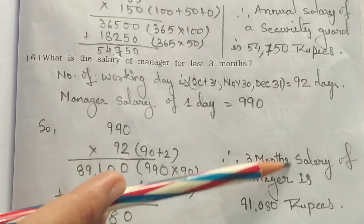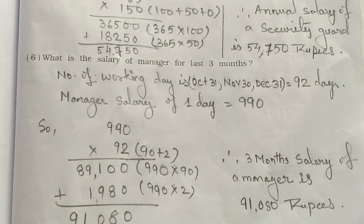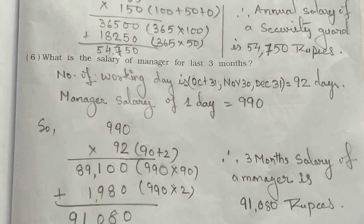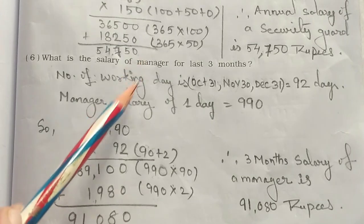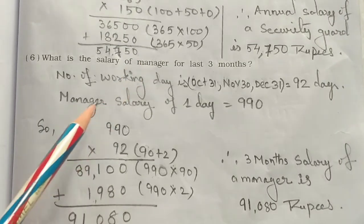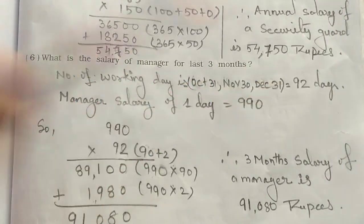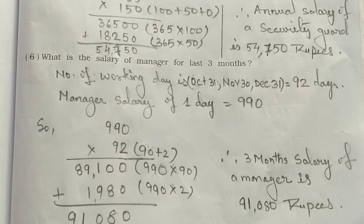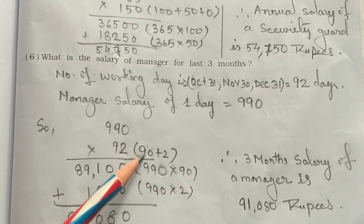Therefore, the last 3 months salary of a manager is 91,080 rupees. In all these questions, you first find the number of working days, then multiply by the per-day salary using the different multiplication method to get your answer.